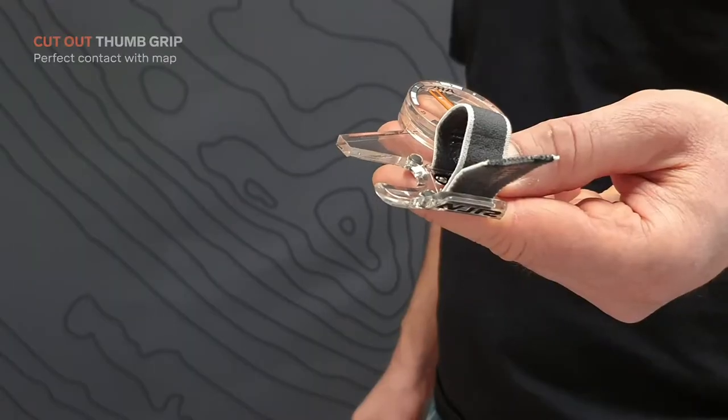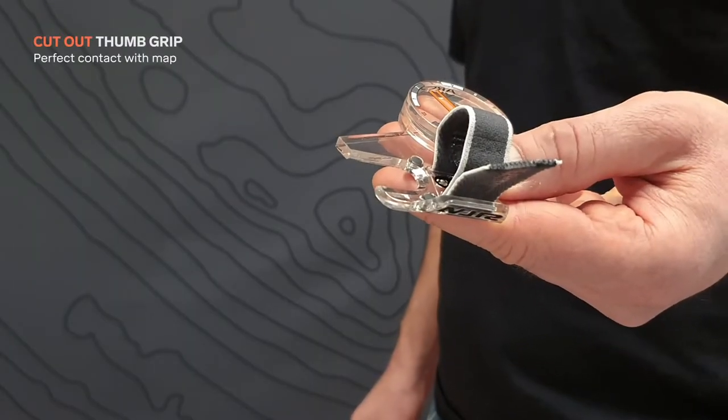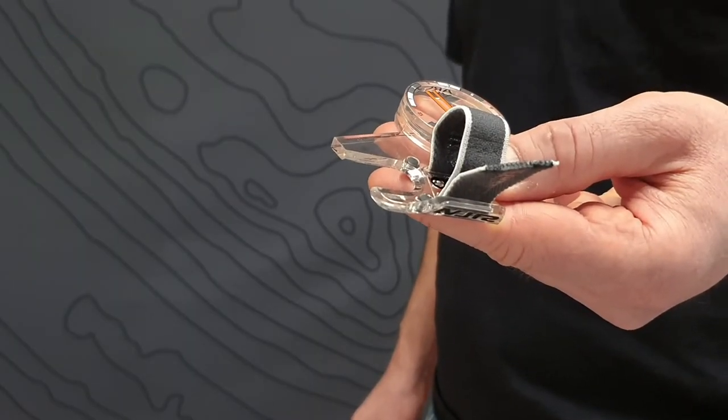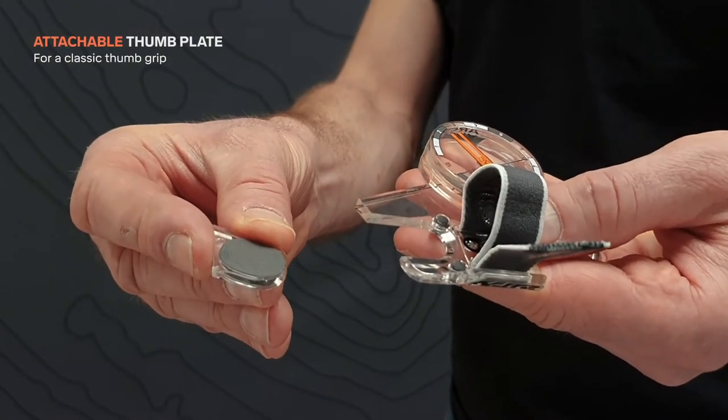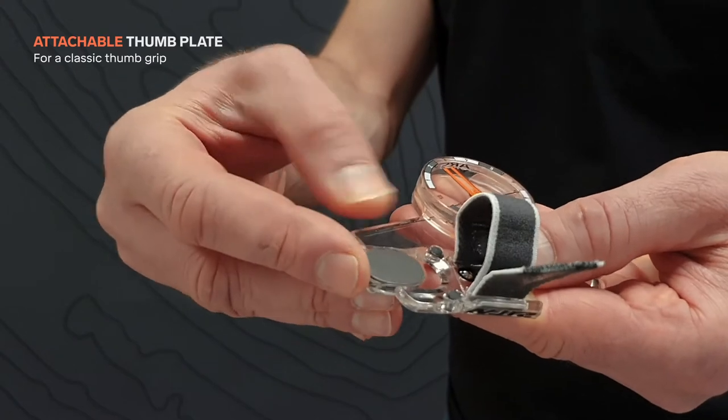The base plate has a cutout to provide perfect contact between thumb and map, but it also has an attachable thumb plate for those who prefer a more classic thumb grip. Simply slide it on and off to the base plate like this.